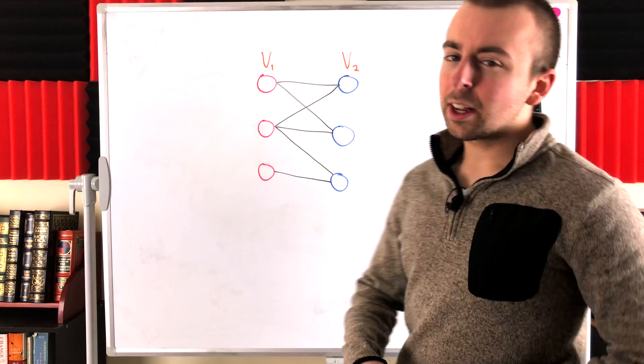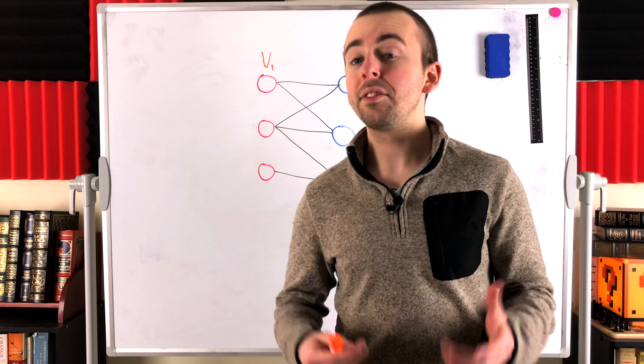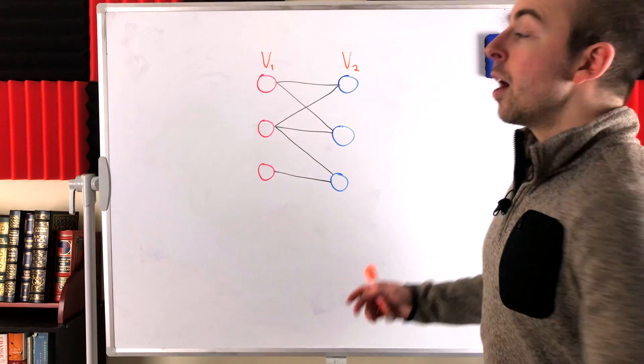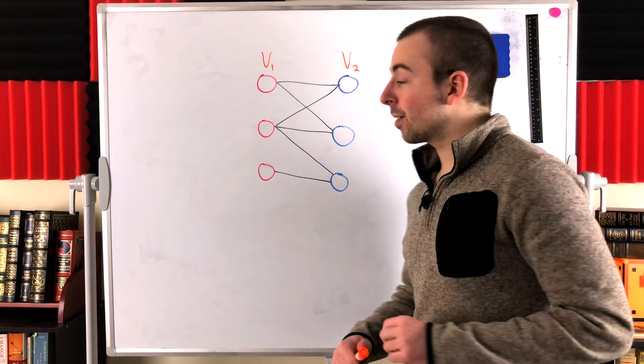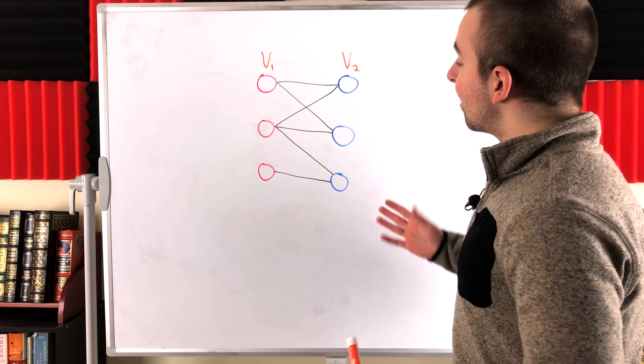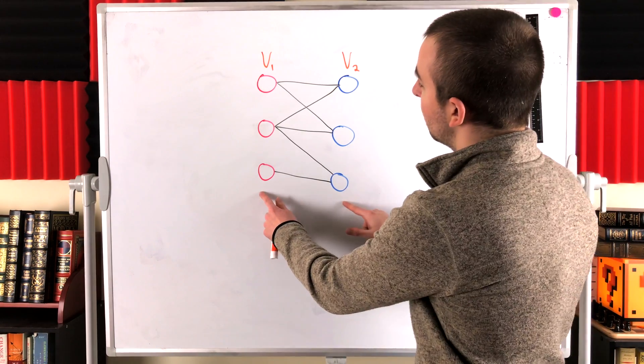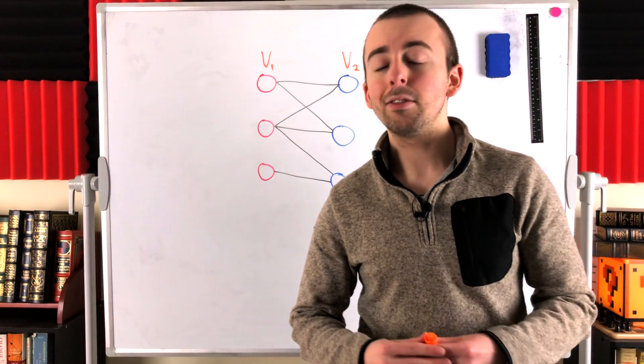Notice that in this bipartite graph, every vertex has at least one neighbor. One of the nice things about this type of bipartite graph where every vertex has a neighbor is that the partitioning into these two sets is unique.